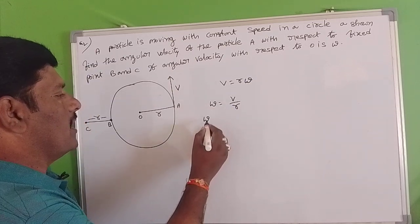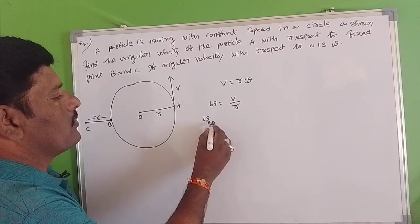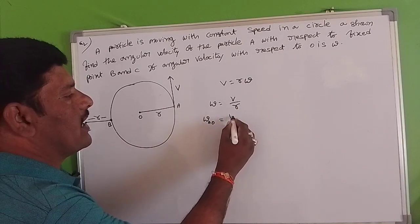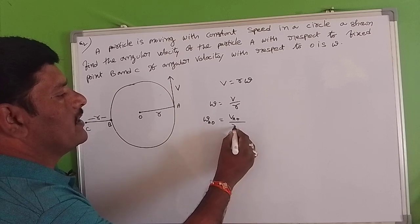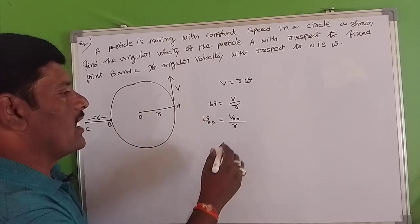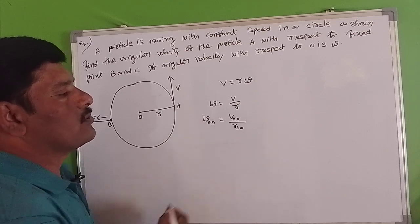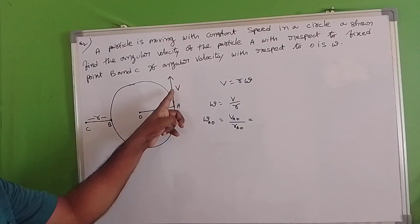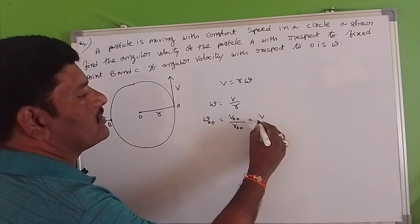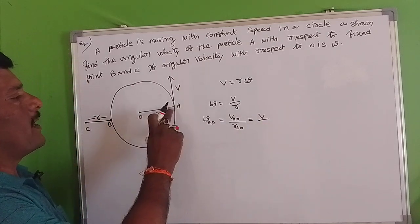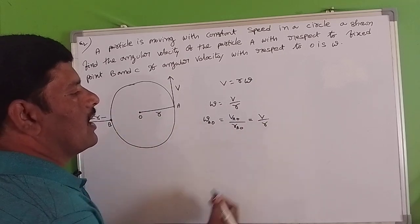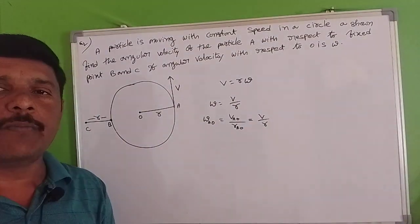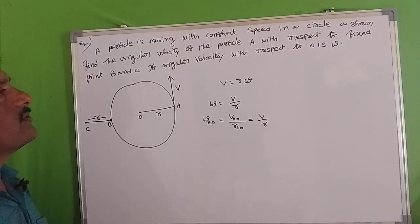Now we want to find out the angular velocity of A with respect to O. That equals the velocity of A with respect to O divided by the perpendicular distance to the velocity of A with respect to O. According to the statement, the velocity of A is V, and the perpendicular distance R_AO is R. So the angular velocity of A with respect to O is V by R.